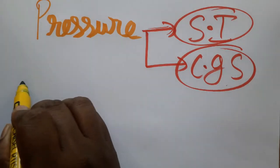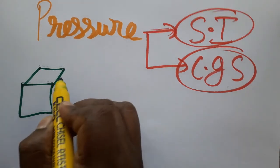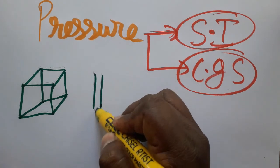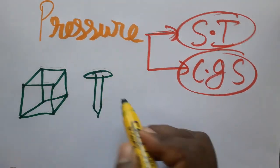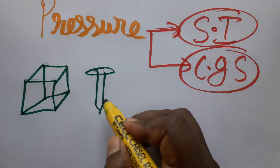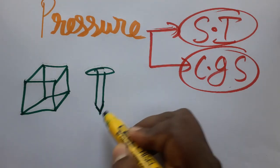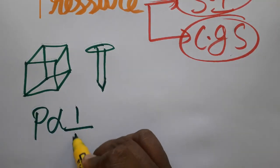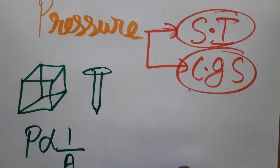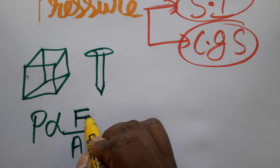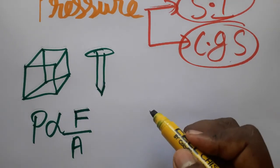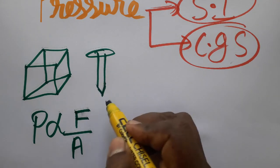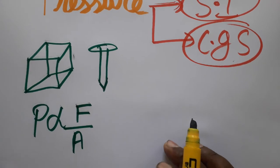Consider two objects: one is a cuboid and another one has a sharp edge. Imagine both have the same mass. The one with the sharp edge is going to cause more pressure. So we come to know that pressure is inversely proportional to area and directly proportional to force. More force means more pressure; less area also means more pressure.